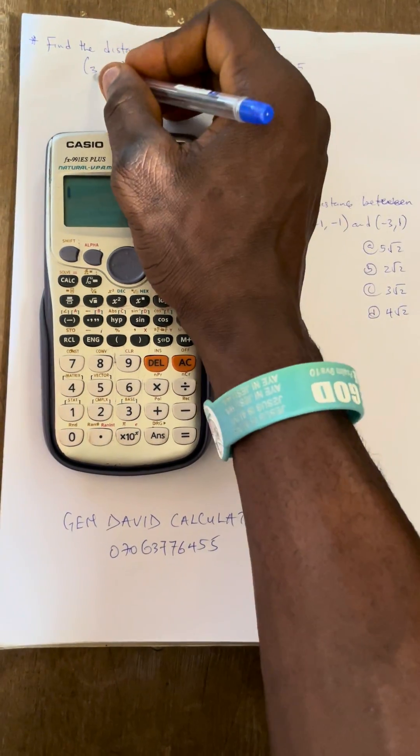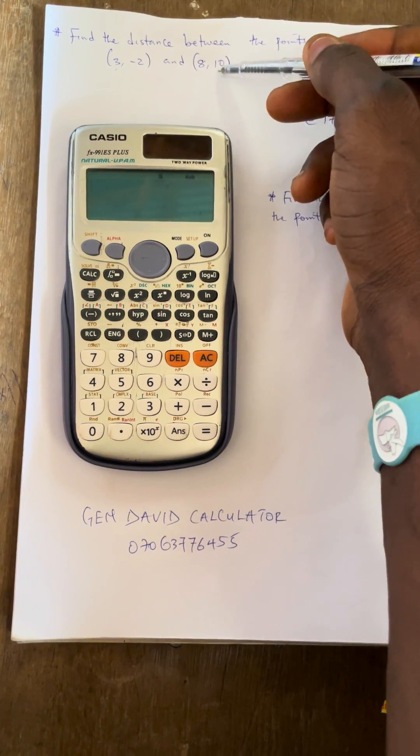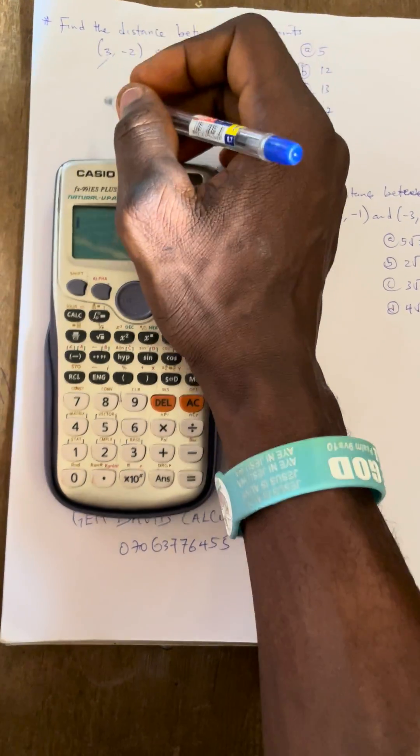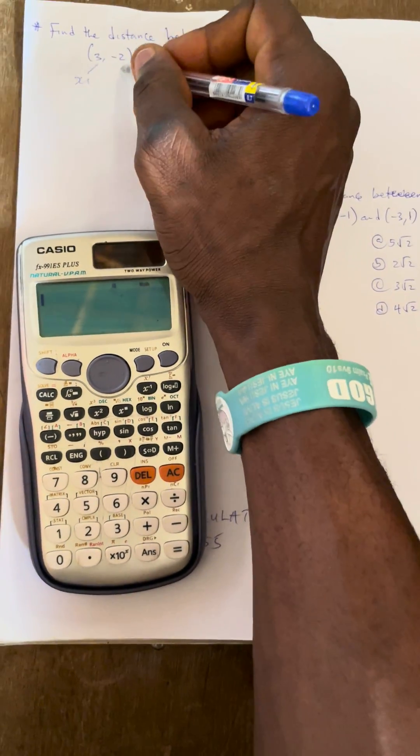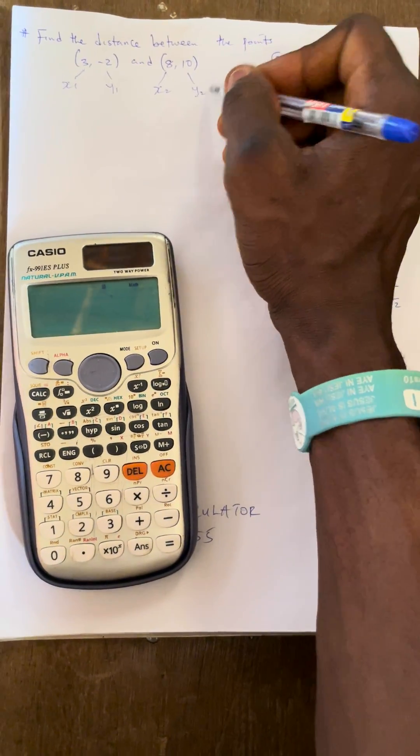You have to observe that the first point, they say find the distance between the points, this is the first point, and this is the second point. According to this, this will be your x1, this will be your y1, this will be your x2, and this will be your y2.